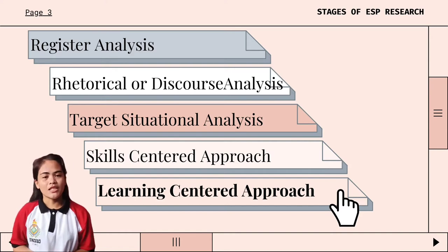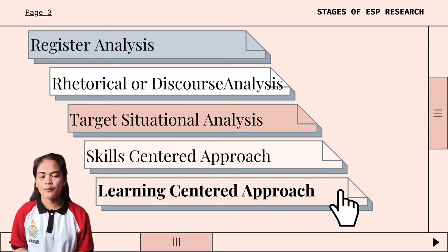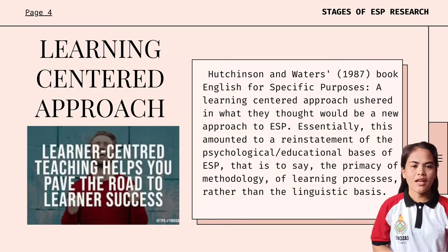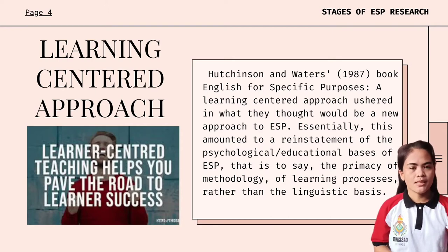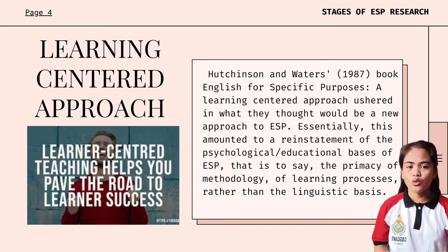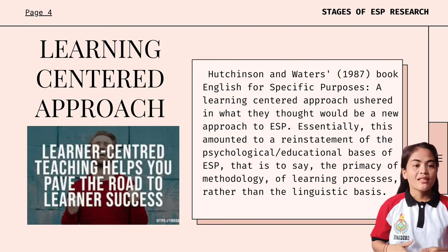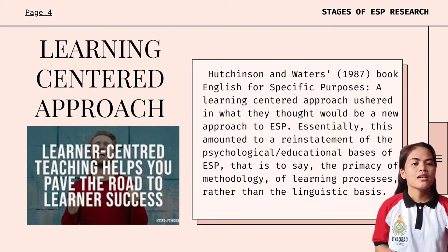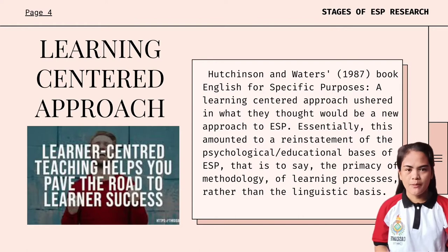The last stages are the learning-centered approach and genre analysis. Hutchinson and Waters' 1987 book, English for Specific Purposes: A Learning-Centered Approach, ushered in what they thought would be a new approach to ESP. Essentially, this amounted to a reinstatement of the psychological and educational basis of ESP.